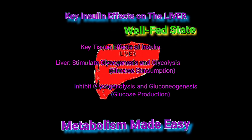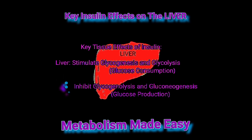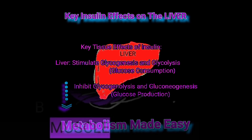Importantly, insulin through its receptor will also have two inhibitory effects in the liver. Through a cascade of intracellular events, insulin will inhibit glycogenolysis (glycogen breakdown) and will inhibit de novo glucose synthesis, or gluconeogenesis.